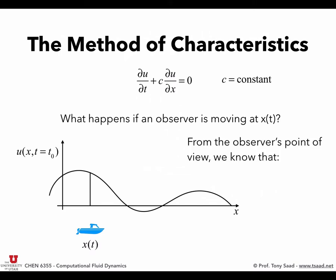From the observer's perspective, the rate of change they see is du/dt (total) = ∂u/∂t + (du/dx)(dx/dt), where dx/dt is the speed of the observer. This is the material derivative we derived in the first few lectures. The total derivative seen by the observer equals the local time change plus the convective term — you should know this by heart.